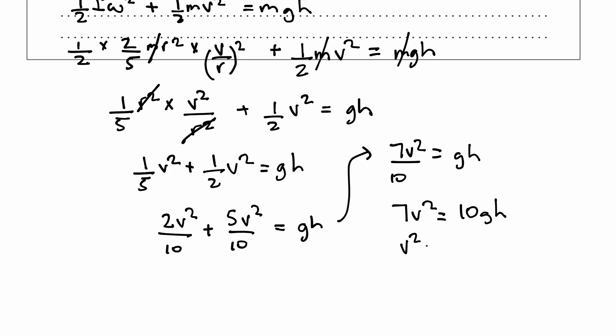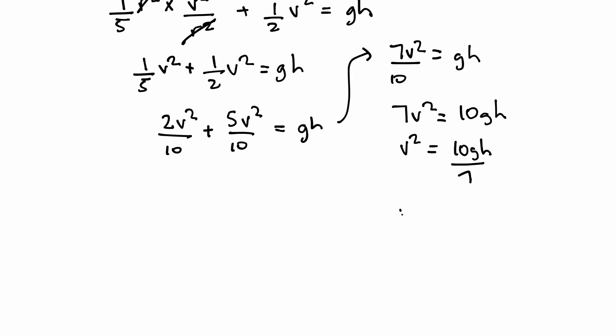v² is equal to 10gh/7. So finally, v is equal to √(10gh/7). And that's your answer.